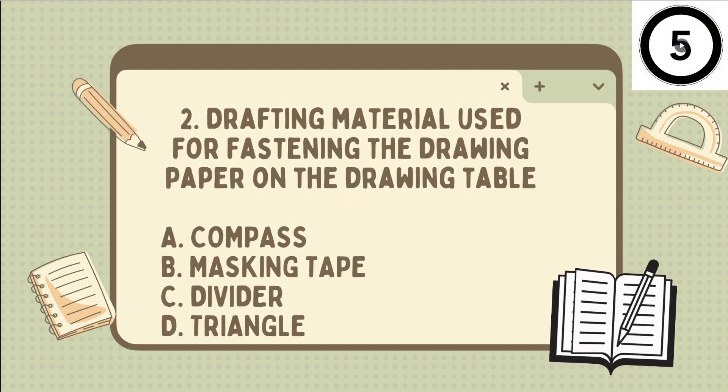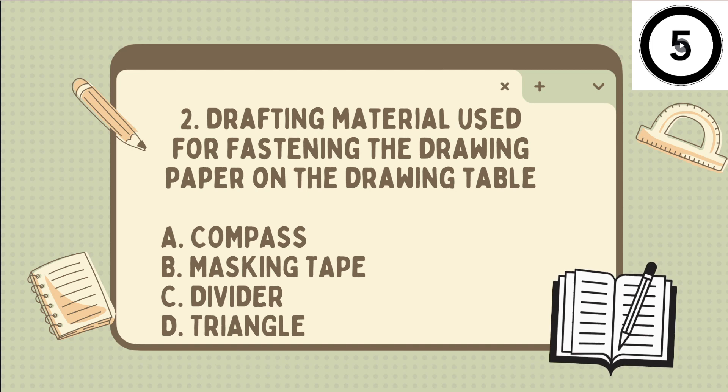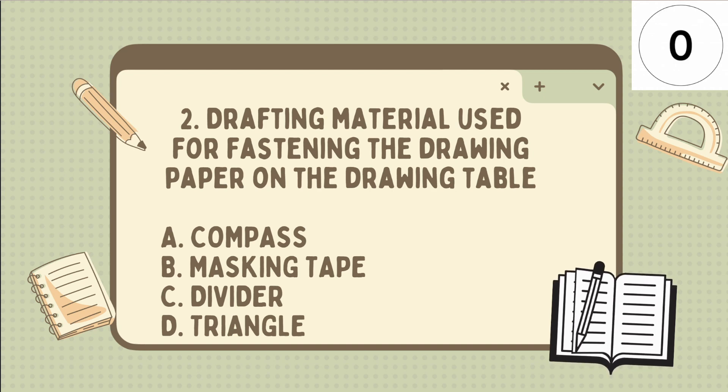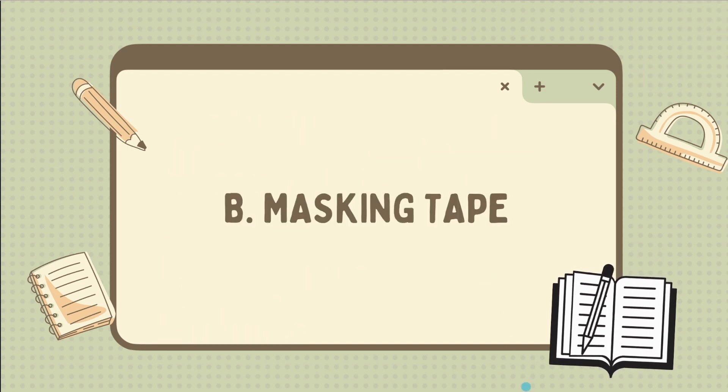Next one. Drafting materials used for fastening the drawing paper on the drawing table. Is it A. Compass. B. Masking tape. C. Divider. D. Triangle. The answer is... Very good. It's B. Masking tape.